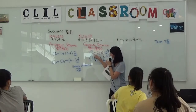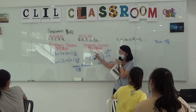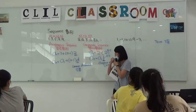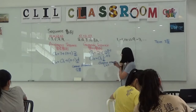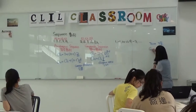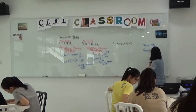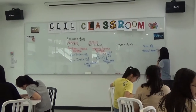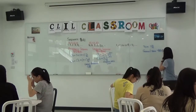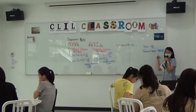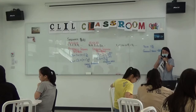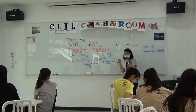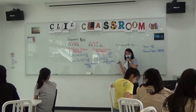One more thing. We also call it — how do we say it in Chinese? 通項 (tōng xiàng). Yes, 通項. So 通項 in English is general term. Can you find the general term? Write down 通項 on the right. Any questions so far? No? OK.